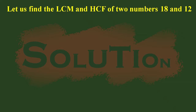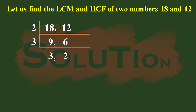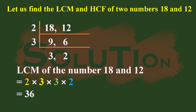First we will find the LCM. We will take 2 and divide the two numbers 18 and 12, giving 9 and 6. Then we divide by 3, which gives 3 and 2. To find the LCM we multiply 2, 3, 3, and 2, which gives 36. So the LCM of 18 and 12 is 36.